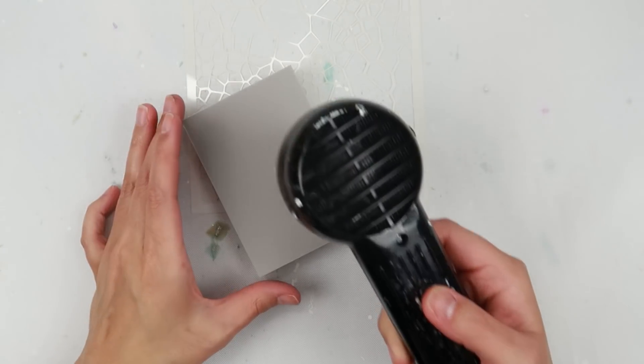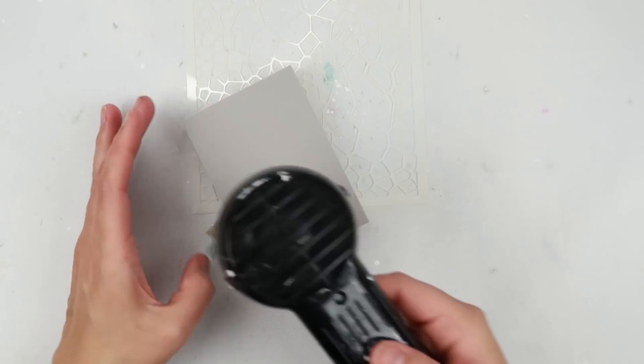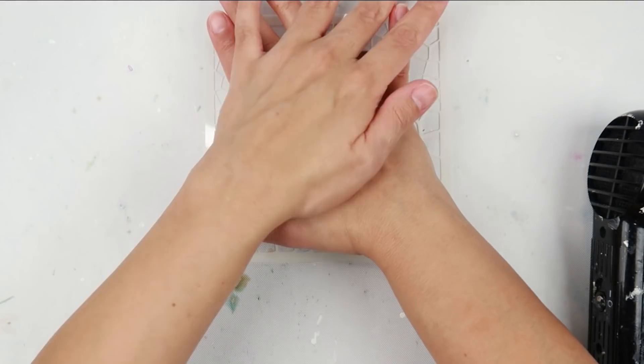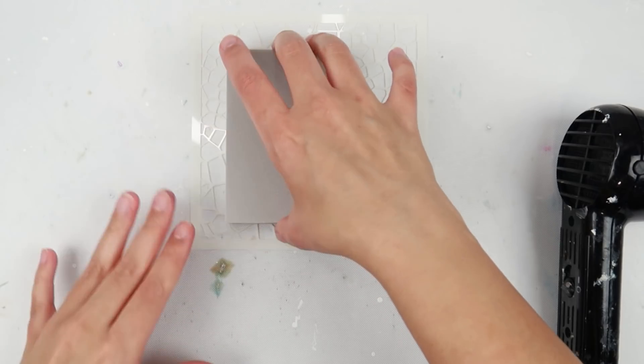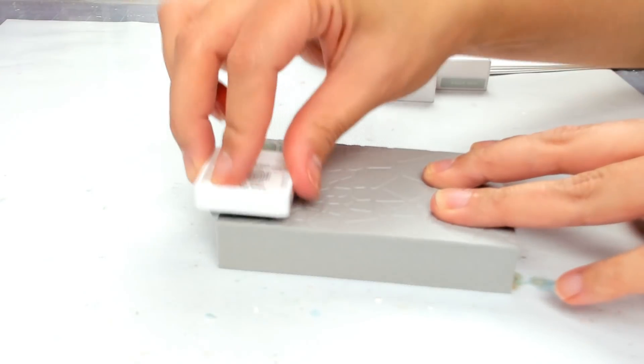I'm going to take my heat tool and heat the foam for about 10 to 15 seconds. After the foam is warm, I am going to flip it over and stick it right on top of a stencil. I'm going to make sure that I press firmly for about five seconds and as you could see the stencil made an impression into the foam.